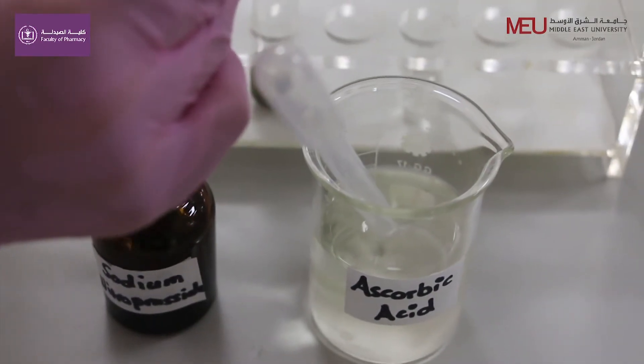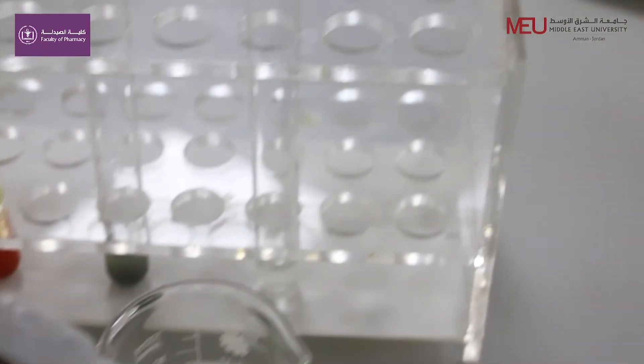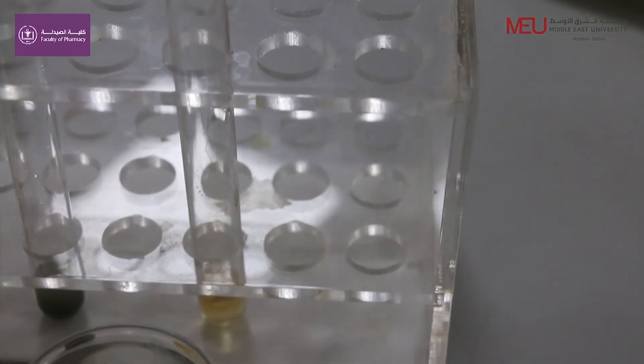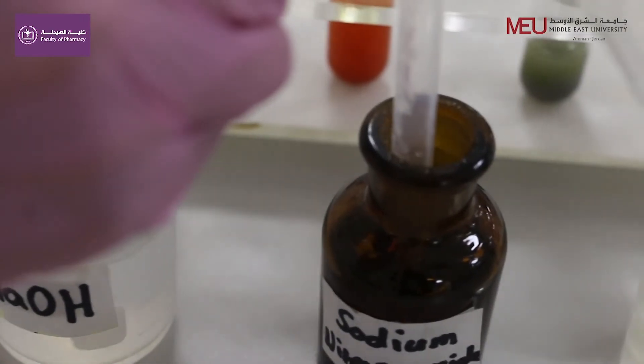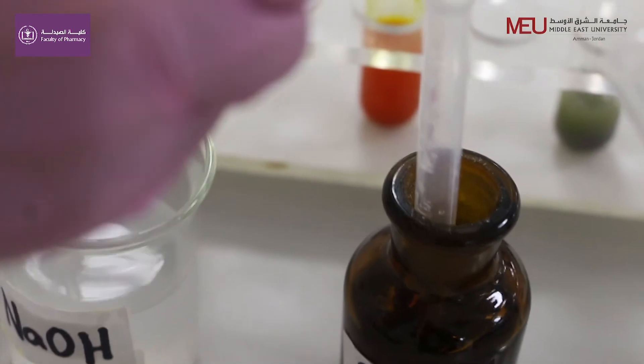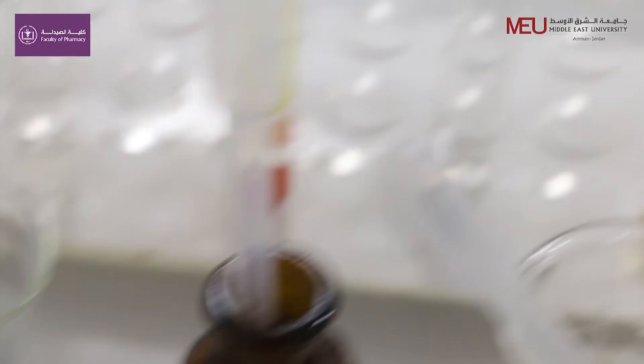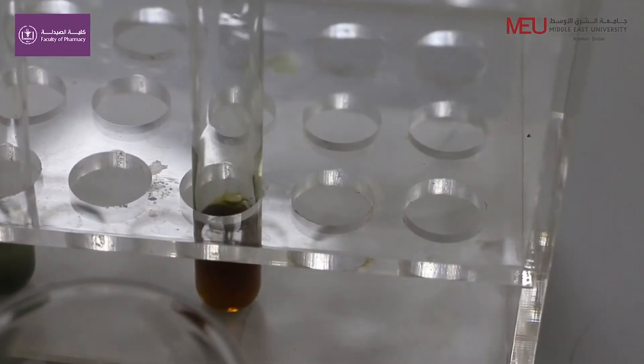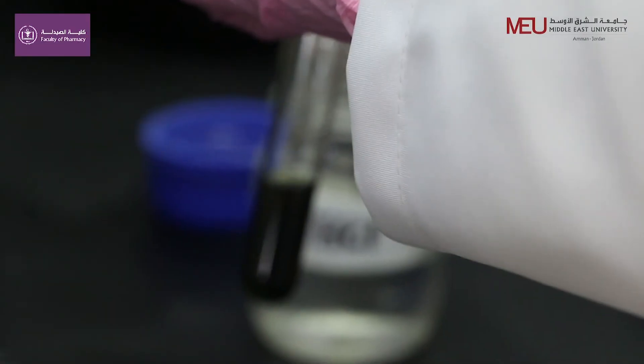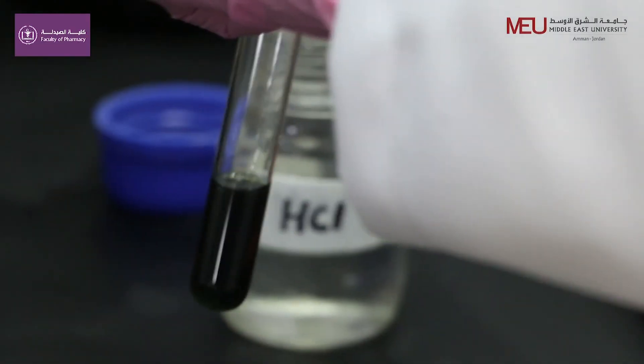Add 0.5 ml of sodium nitroprusside. Add 2 ml NaOH. Add 0.7 ml HCl. You will observe blue-black color.